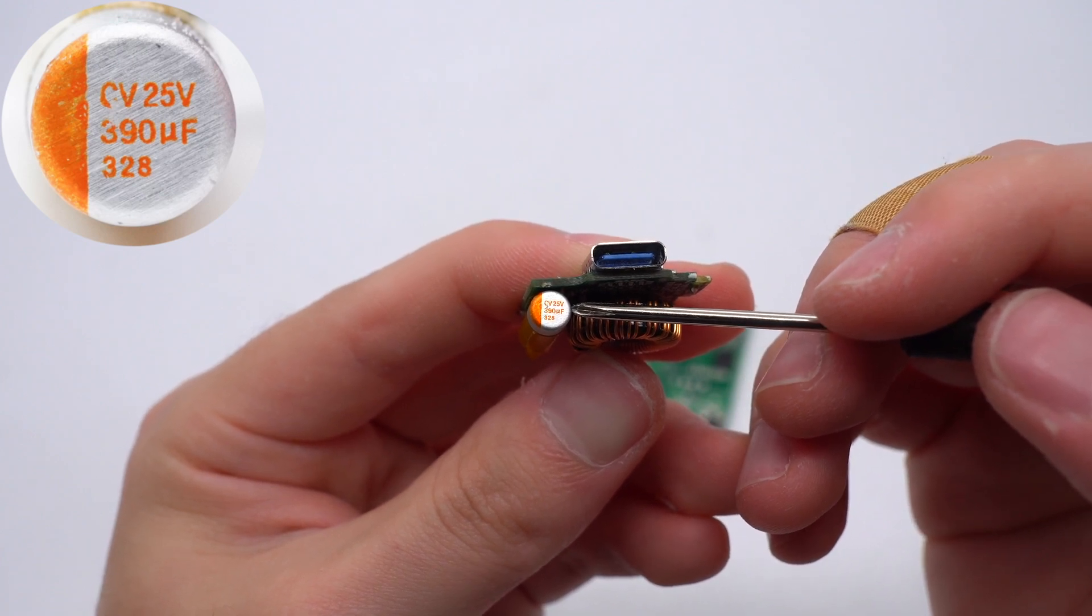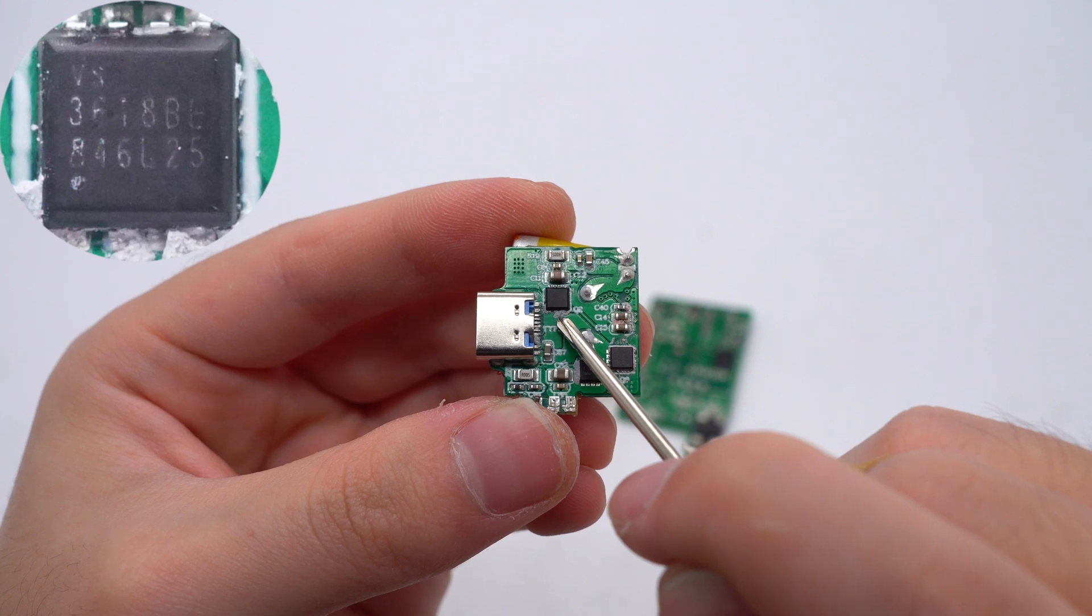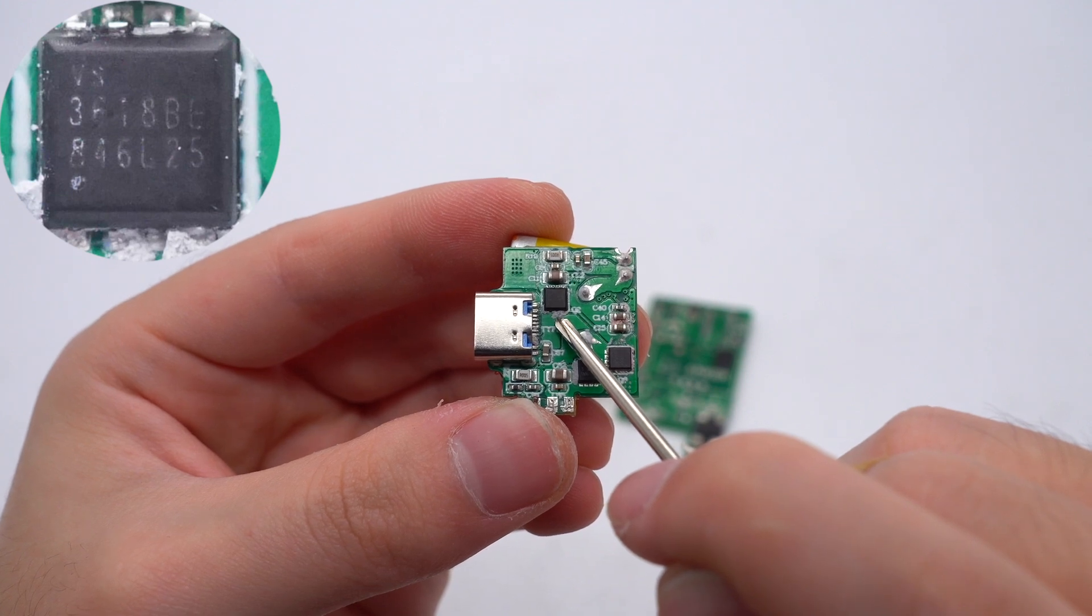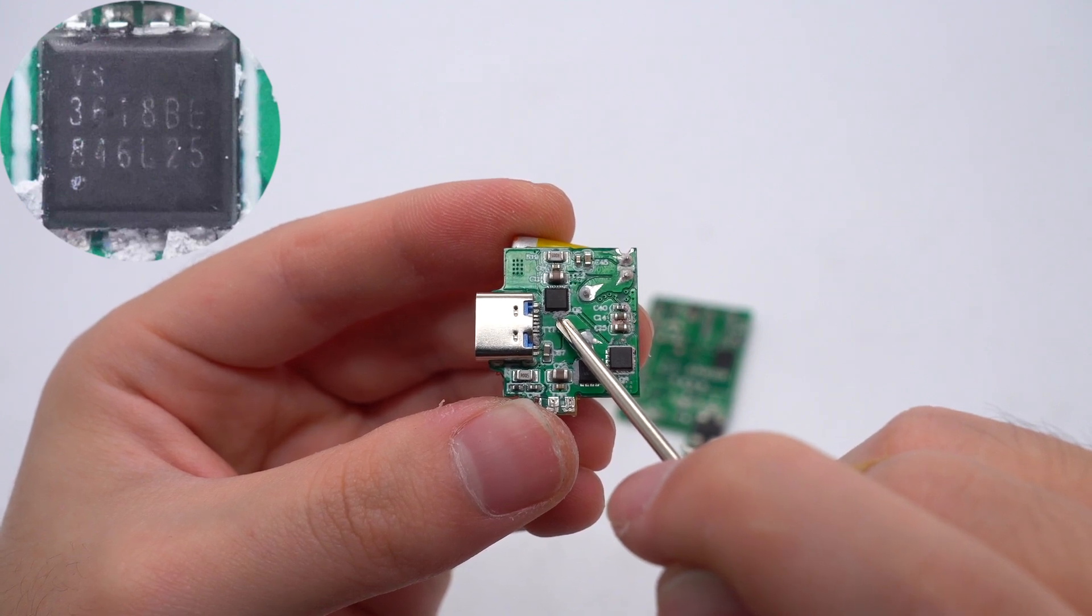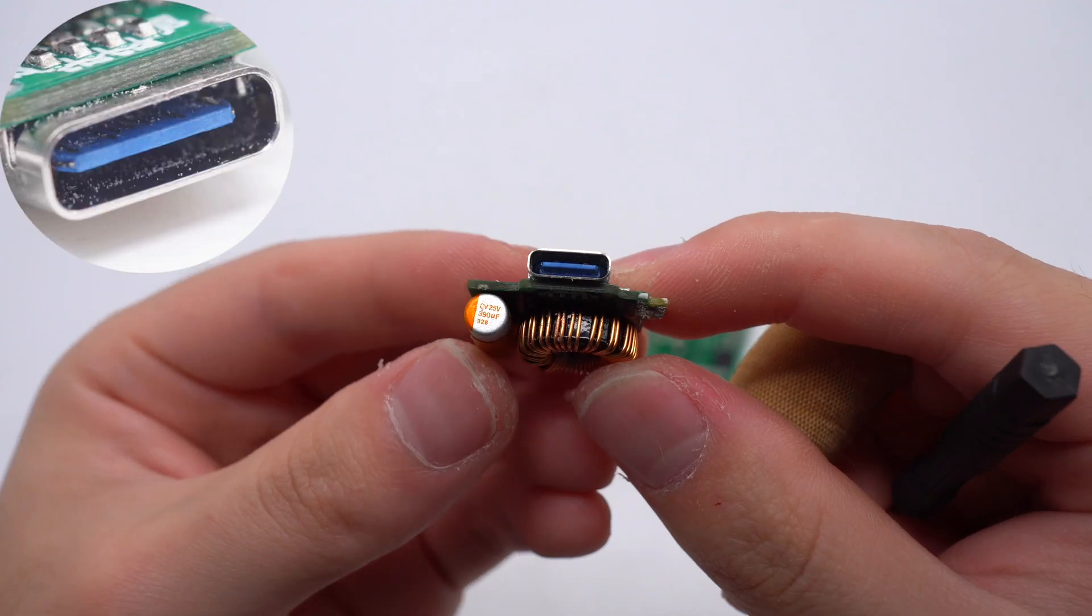The VBUS MOSFET is from Xiaojiesemi in WSP-DFN3333 package, 30V, 5.2mΩ. The USB-C1 socket is blue.